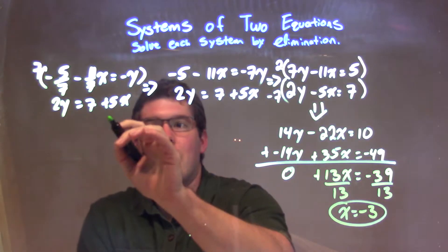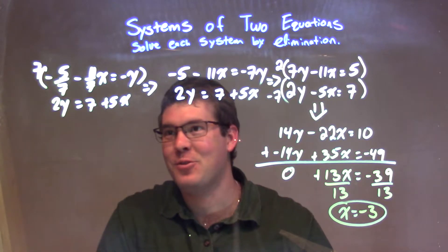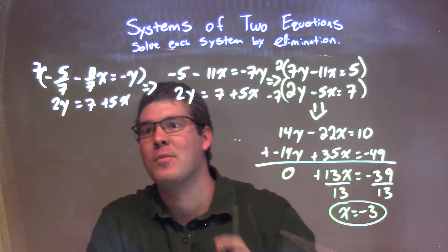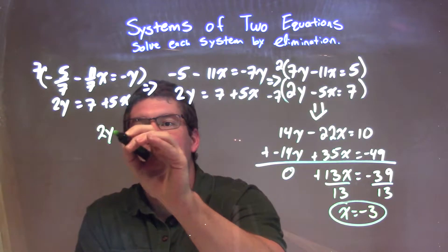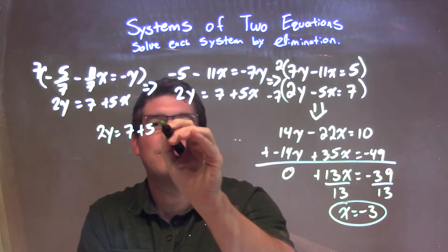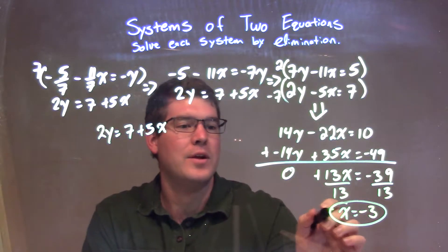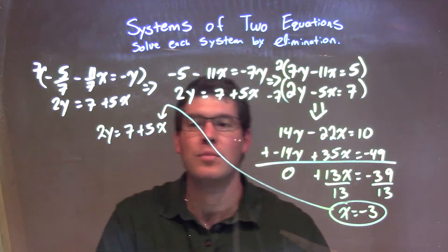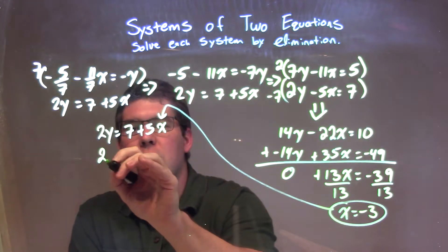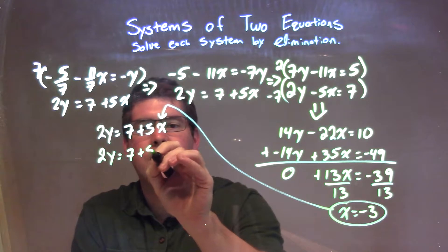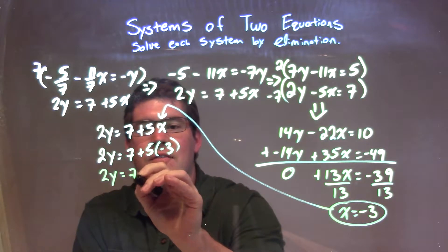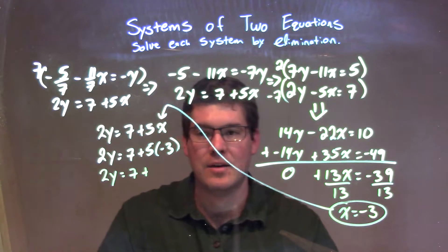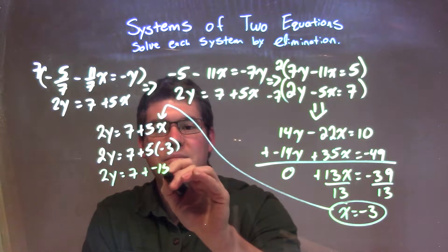If x equals negative 3, we need to find the y. Let's grab our second equation. That looks like the easier one, because although fractions are great, I prefer not to deal with them if I don't have to. 2y equals 7 plus 5 times x. I'm plugging in negative 3 for that x. 2y equals 7 plus 5 times negative 3, and 5 times negative 3 is negative 15.